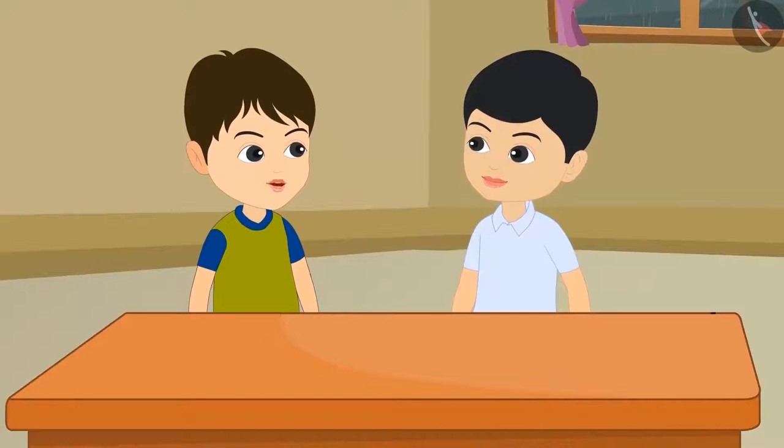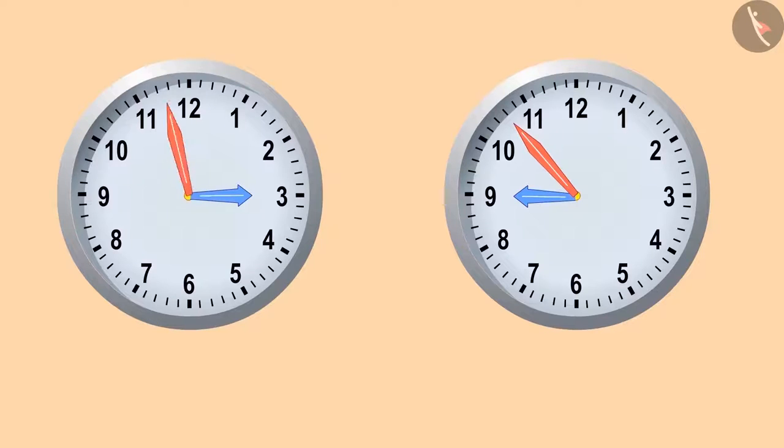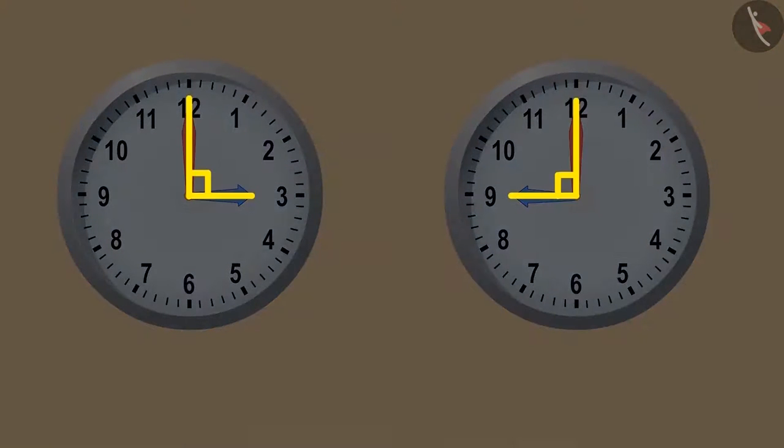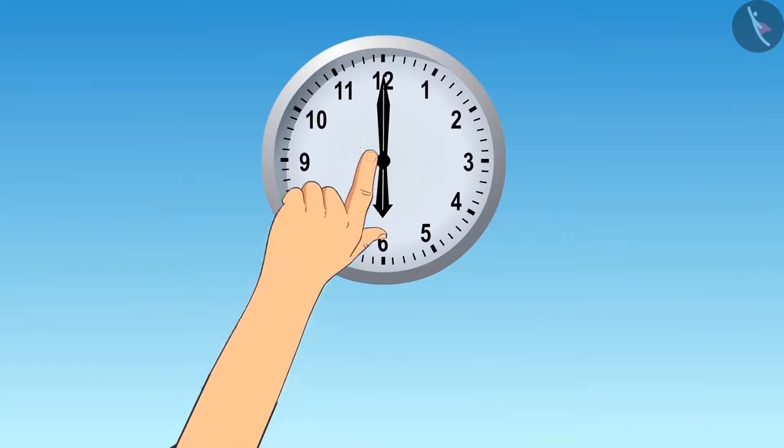Now can you tell me at what times an angle of 90 degrees is formed in the clock? You can pause the video here if you want and think about it. In my opinion, right angle is made at 3 o'clock and 9 o'clock. But I feel that a right angle is also formed at 6:15.